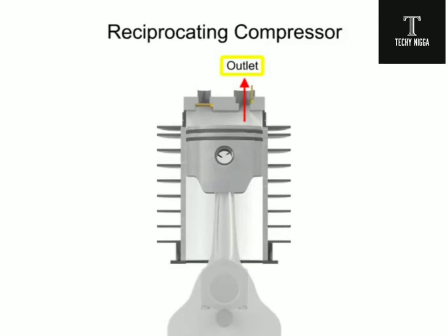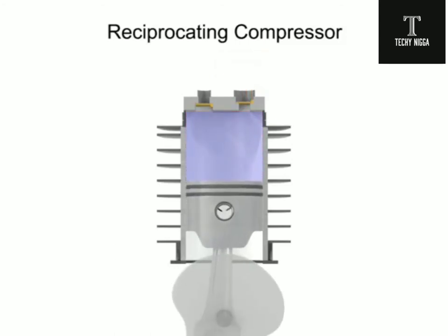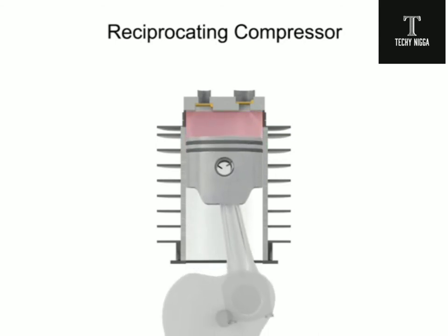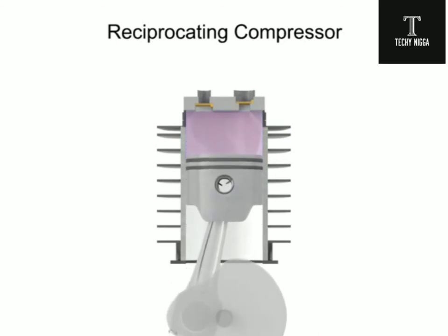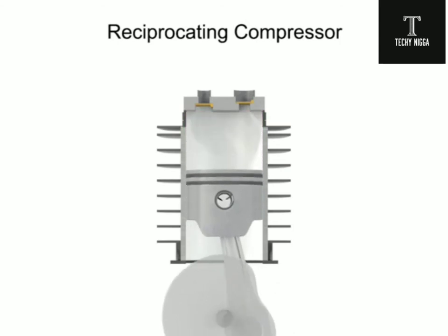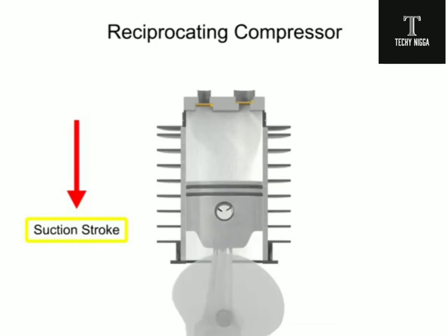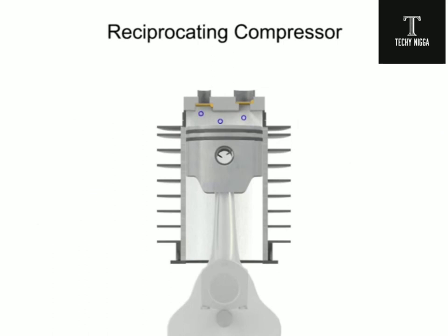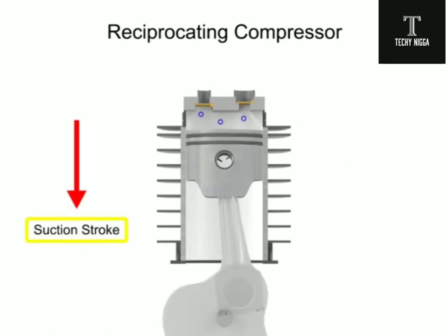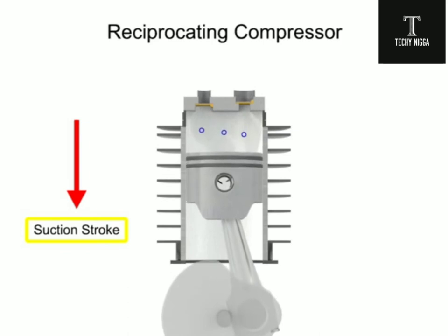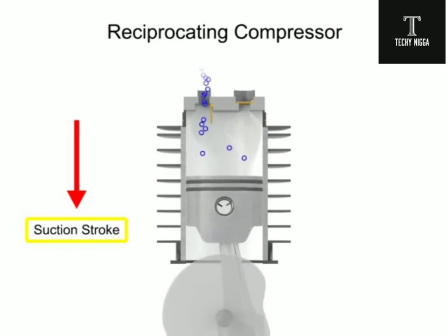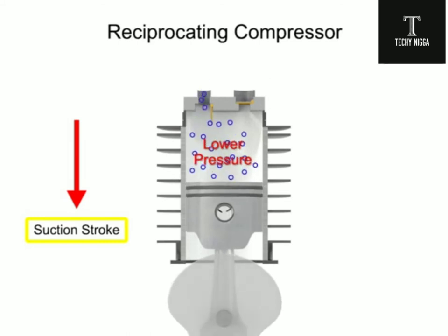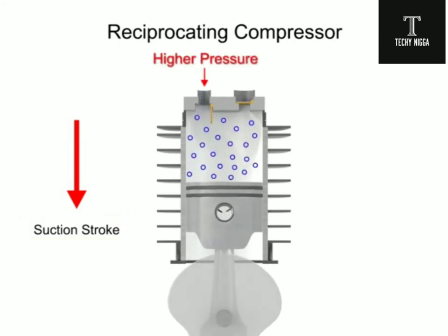As the crankshaft turns, the piston lowers and raises, changing the available volume within the cylinder. The downward stroke of the piston is called the suction stroke. As the piston moves downward, the volume increases within the cylinder. As the volume increases, the pressure within the cylinder becomes lower than the inlet air pressure, allowing the higher pressure outside air to push open the inlet valve and allow more air into the cylinder.